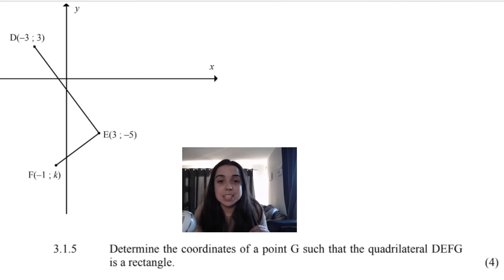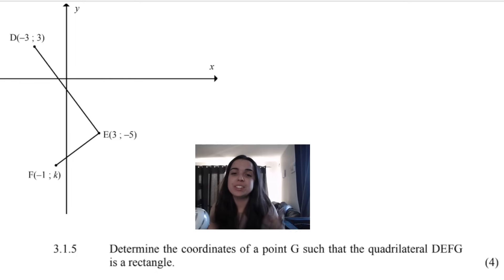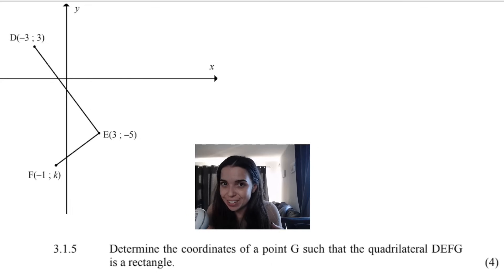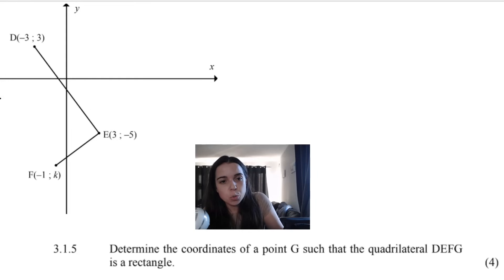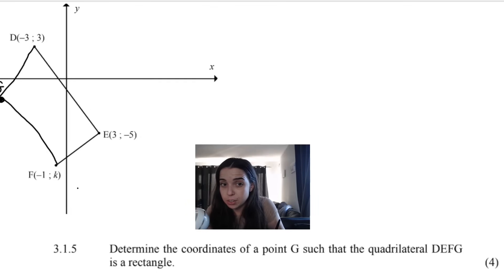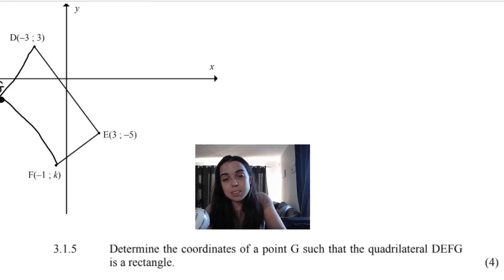Question 3.1.5 says: determine the coordinates of a point G such that quadrilateral DEFG is a rectangle. They want us to find the coordinates of G somewhere in the plane so that DEFG forms a rectangle. There are lots of different ways to do this — I'll show you two methods.